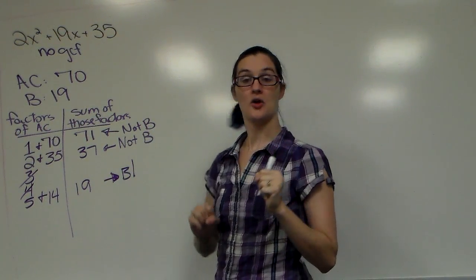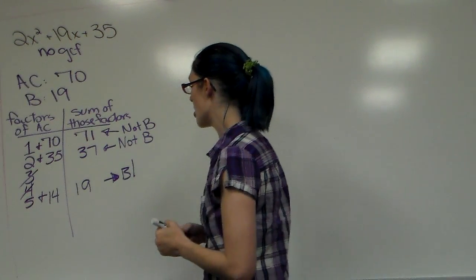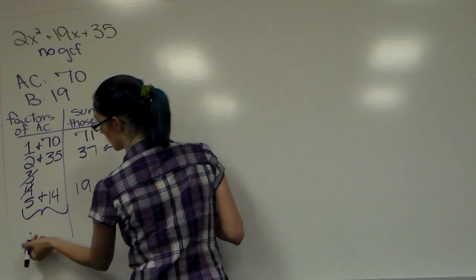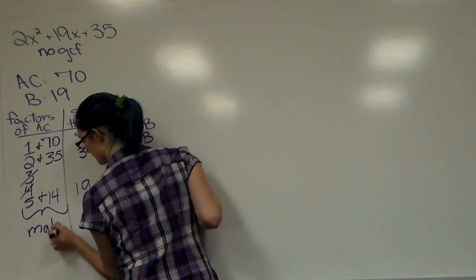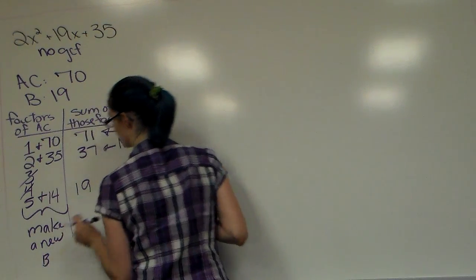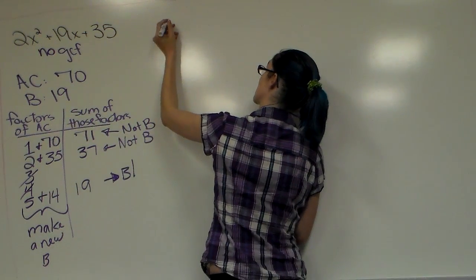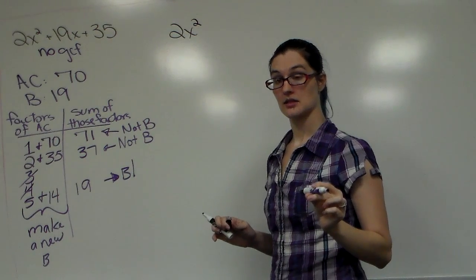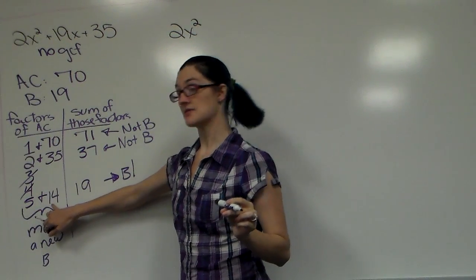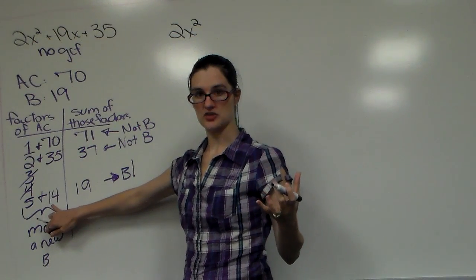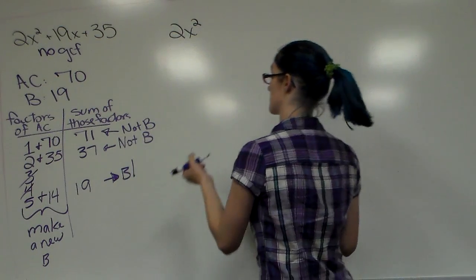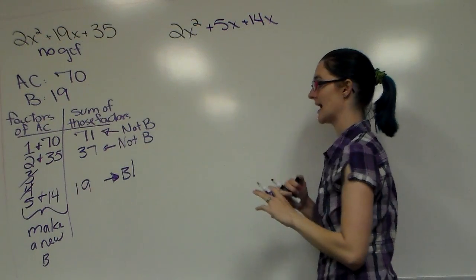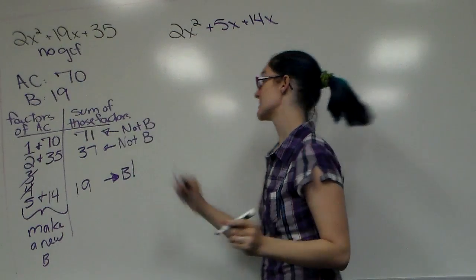It's our B! We're not done yet, we still have quite a bit to do. We're going to take these two numbers and instead of using 19x we're going to make a new B. We're going to keep our A the same, 2x², and instead of writing 19x we're instead going to have 5x plus 14x. That's still 19x, right? All we've done is un-combined like terms. So plus 5x plus 14x, your C, your 35, that's going to stay the same.